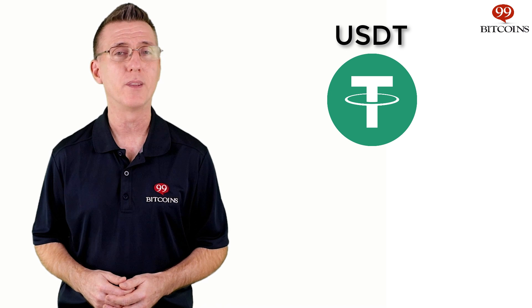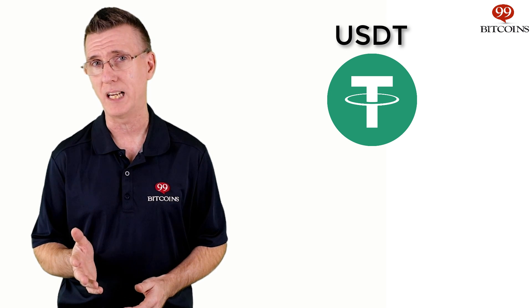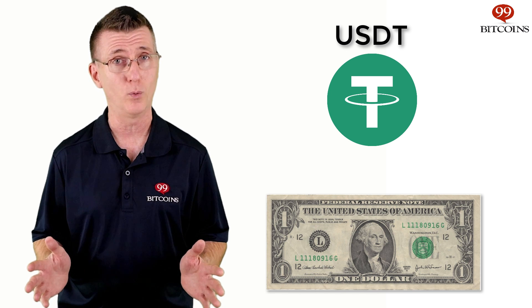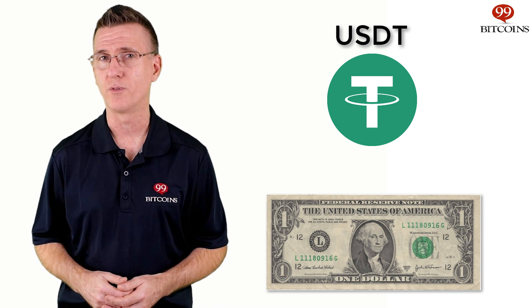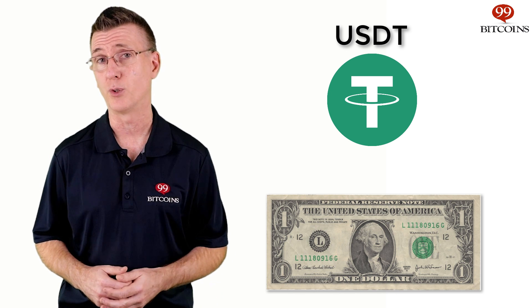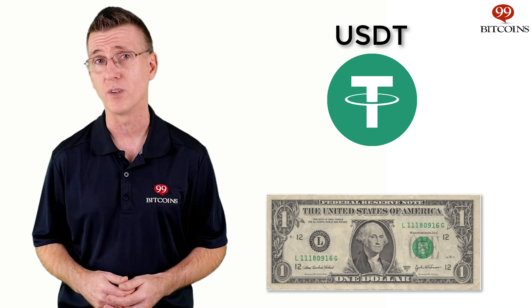A stablecoin's value is pegged to a real-world currency, also known as a fiat currency. For example, the stablecoin known as Tether or USDT is worth one US dollar and is expected to maintain this peg no matter what. Stablecoins allow for the convenience of cryptocurrency — which means fast settlement and fewer regulatory hurdles — along with the stability of fiat currencies.